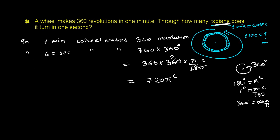In 60 seconds, the wheel is making 720 pi radian. So let me write in shortcut. That will be better here. 60 seconds makes 720 pi radian.